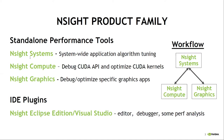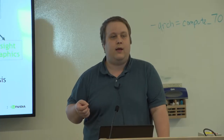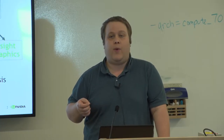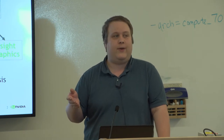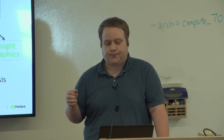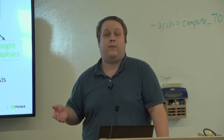Nsight Systems is the tool designed to collect a timeline of the activity on your node — system-wide application analysis. You're really answering: on my node, where is the time being spent? How much time is on the GPUs, how much on the CPUs? You get a stacked-up view as a function of time of what's happening. It will clearly tell you whether memory — copying data back and forth between GPU and CPU — is your bottleneck.